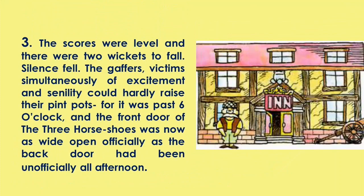The scores were level and there were two wickets to fall. Silence fell. The gay first victims, simultaneously of excitement and senility, could hardly rise. Their feet moved towards the Three Horseshoes, for it was past six o'clock and the front door of the Three Horseshoes was now as wide open officially as the back door had been unofficially all afternoon. The Three Horseshoes is an inn — a hotel-type establishment where people came to watch the match.